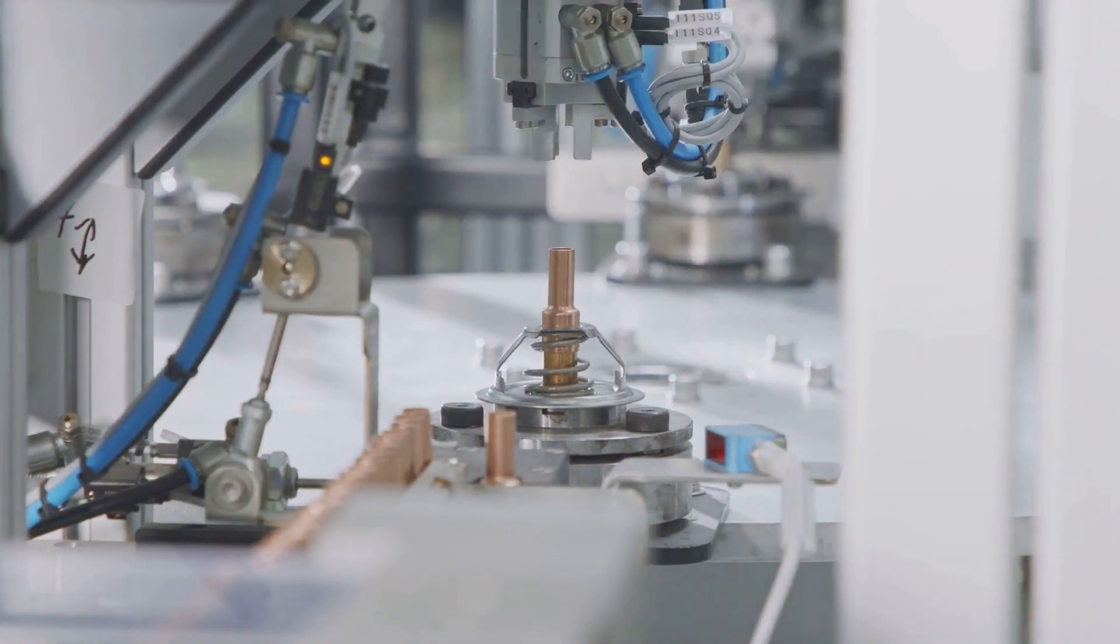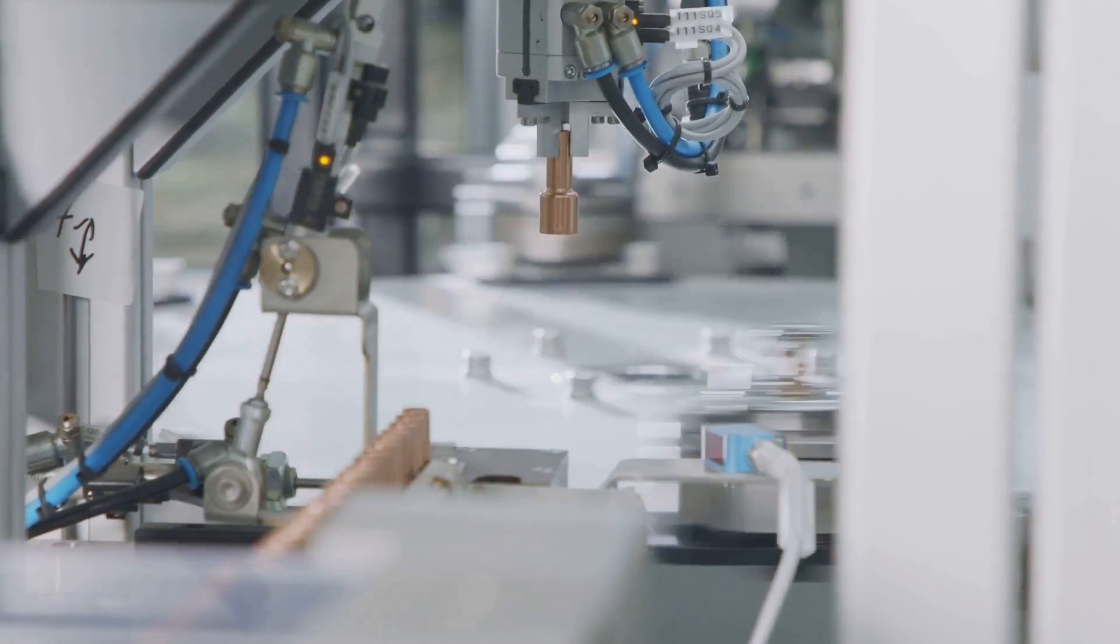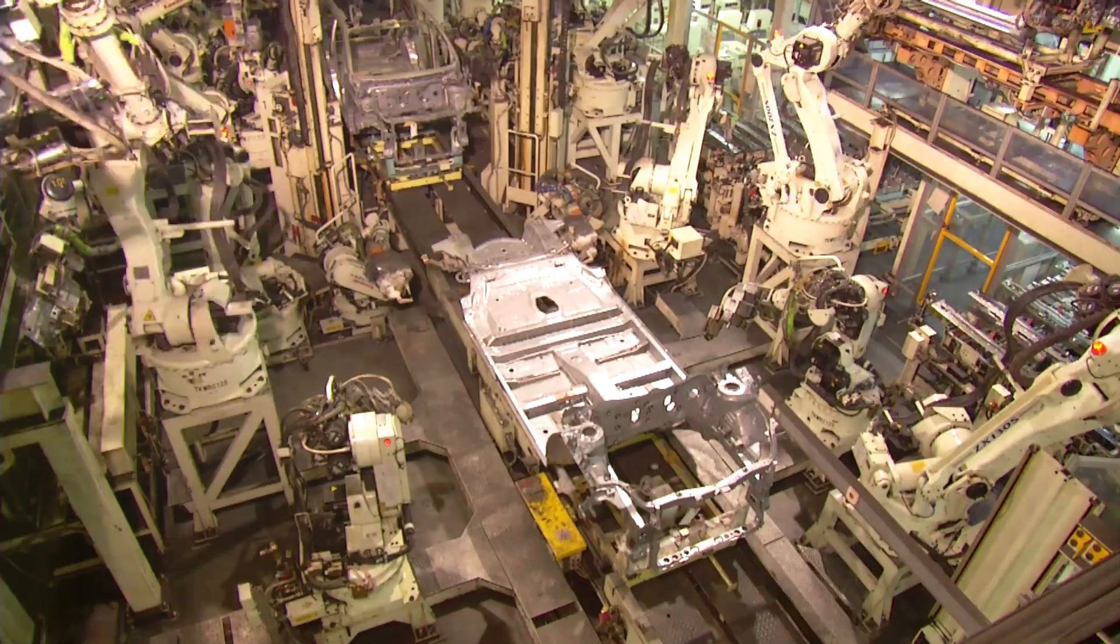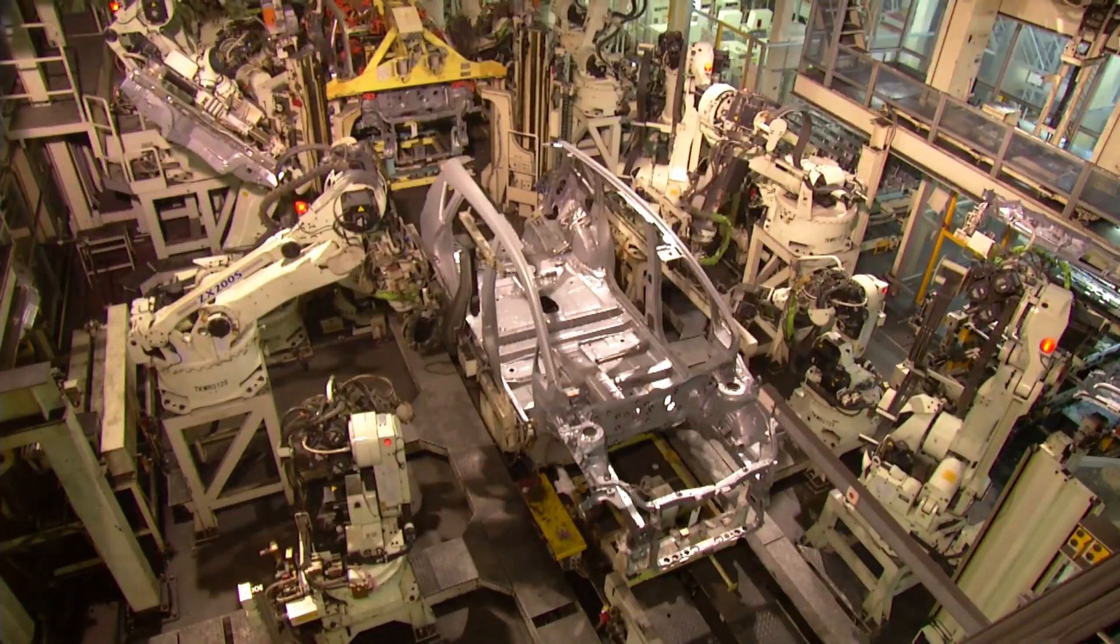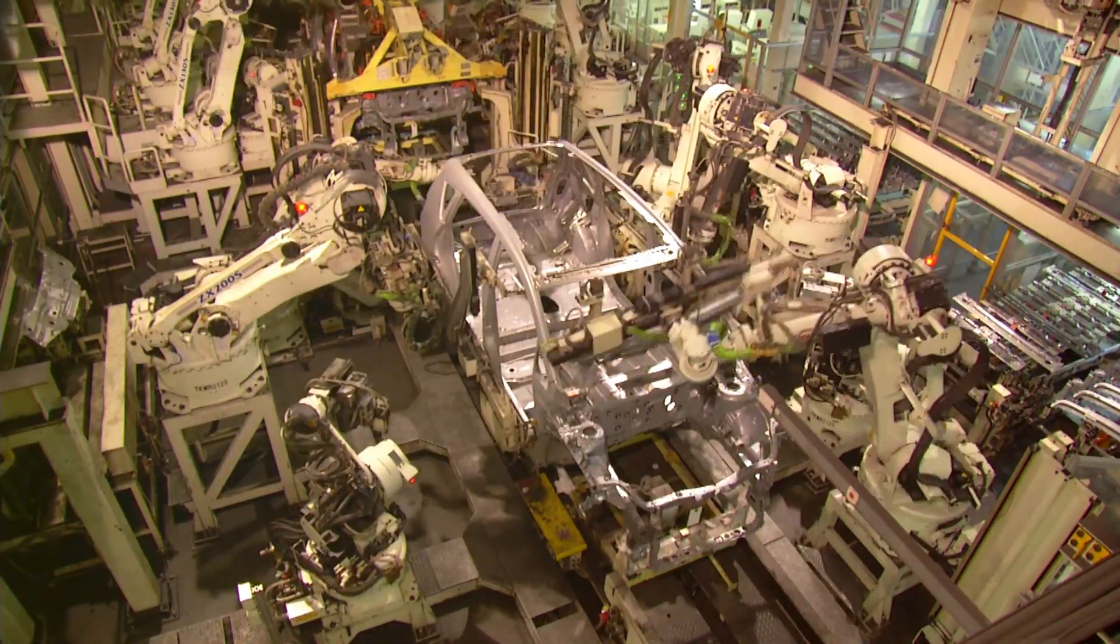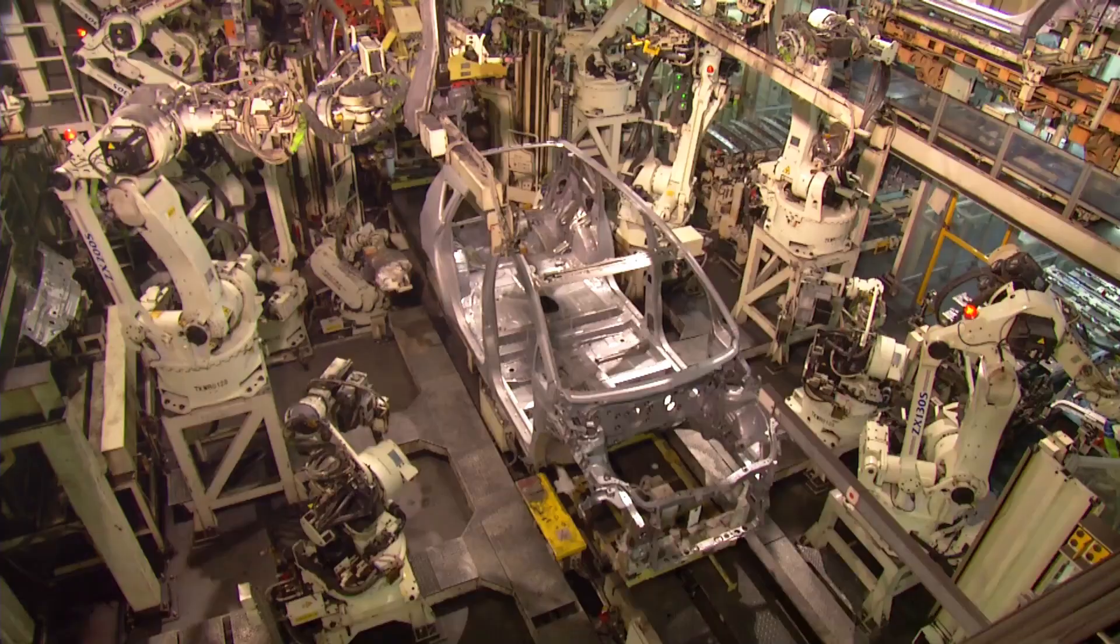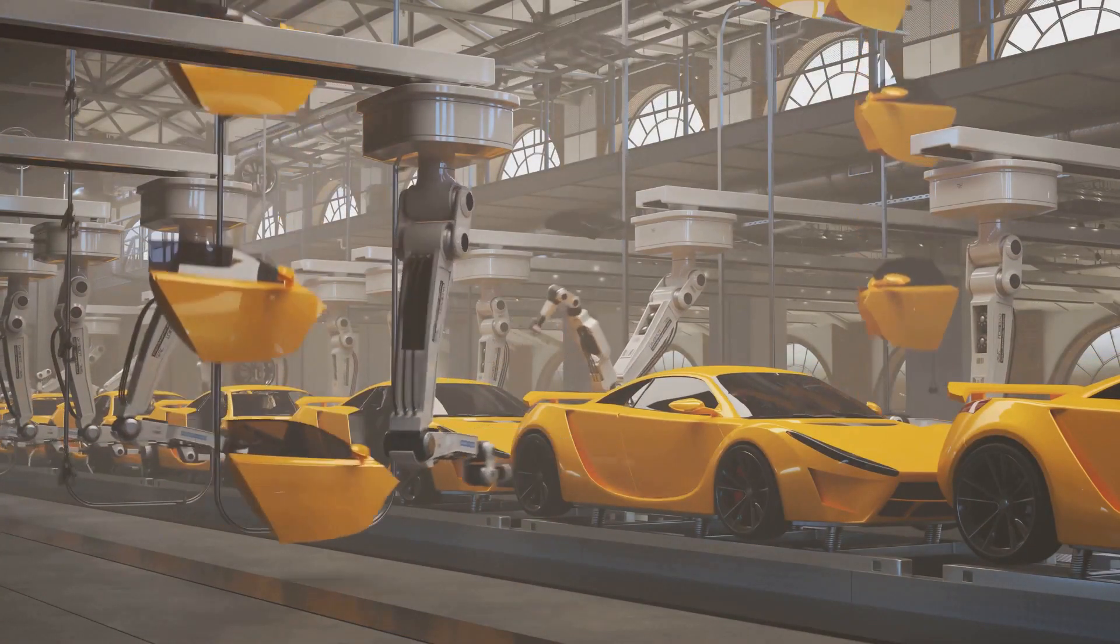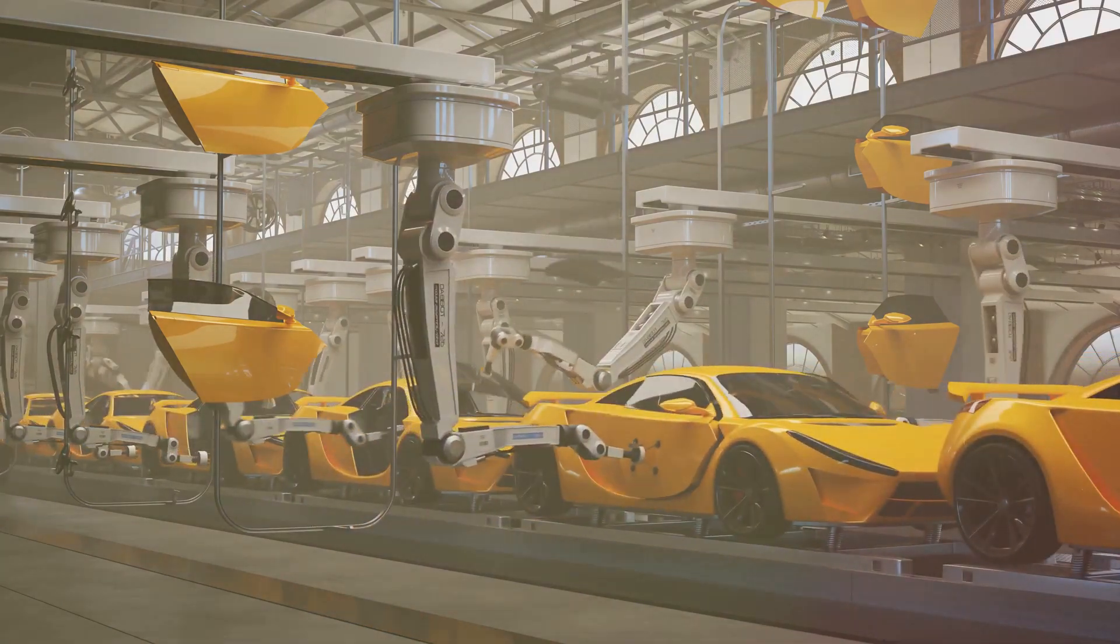These early industrial robots, with their precise movements and tireless work ethic, brought unprecedented levels of efficiency and productivity. The automotive industry was one of the first to harness the power of robotics. Robots took on tasks like welding and painting, jobs that were not only monotonous but also potentially hazardous for human workers.